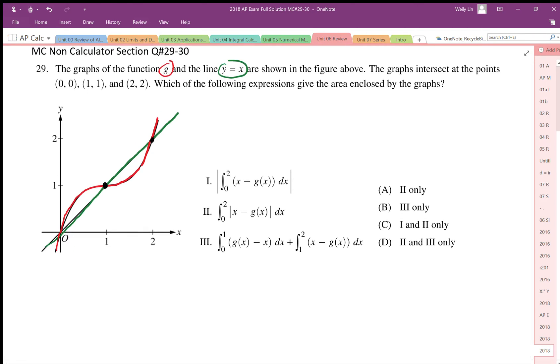Question number 29 says that the graphs of functions G, which is our curved line, and the line y equals x are shown in this picture. The graphs intersect at the three points 0, 1, and 2.